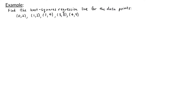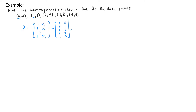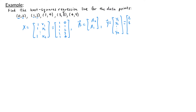To do this, I want to find the least-squares solution to X times beta equals y, where X is the design matrix [1, x1; 1, x2; ...; 1, xn]. In this problem, X is the matrix [1, 0; 1, 1; 1, 2; 1, 3; 1, 4]. Our parameter vector beta is [beta-zero, beta-one], and our observation vector y consists of the y-coordinates: [2, 3, 4, 8, 9].